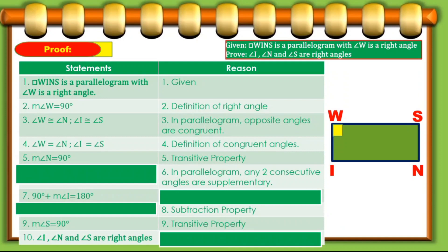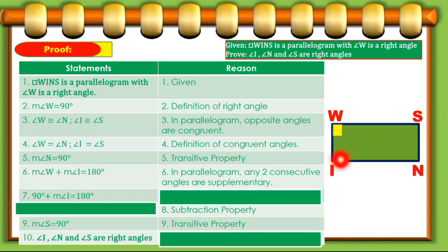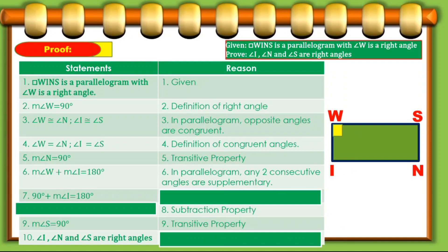Next, angle N measures 90 degrees, and that is by transitive property. And for reason number six, in a parallelogram, any two consecutive angles are supplementary. So our statement would be that the measure of angle W plus the measure of angle I is equal to 180 degrees. Since angle W is 90 degrees and angle I are consecutive angles, they measure 180 degrees. For the measure of angle I, knowing that the measure of angle W is 90 degrees, our next statement is: 90 degrees plus measure of angle I equals 180 degrees, and the reason is by substitution.